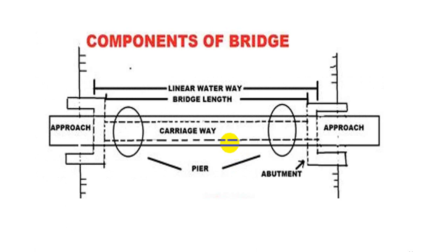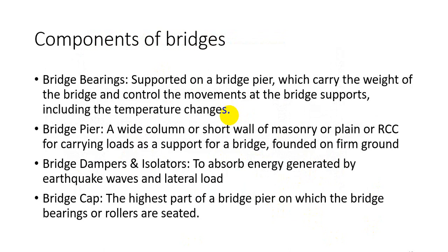Components of a bridge: the basic components include the approach carriageway, abutments at both ends, and piers in between. In detail: bridge bearings support the slab over a pier and control movement at bridge supports including temperature changes such as shrinkage or expansion of the slab. A bridge pier is a wide column or short wall of masonry or RCC for carrying loads, founded on firm ground. Bridge dampers and isolators absorb energy generated by earthquake waves and lateral loads. The bridge cap is the highest part of the bridge pier on which the bridge bearings or rollers are seated.